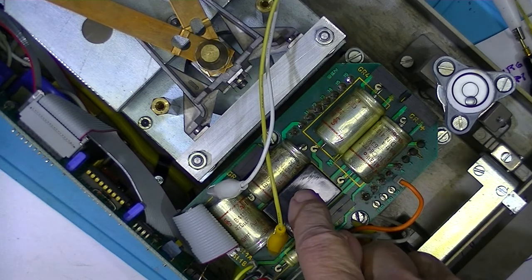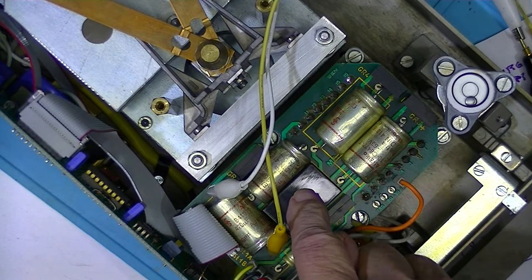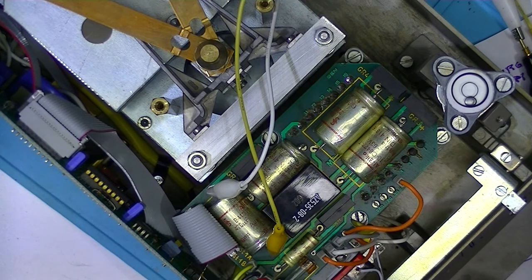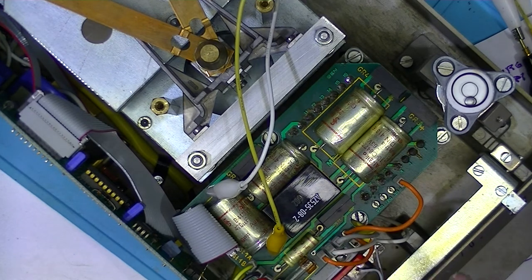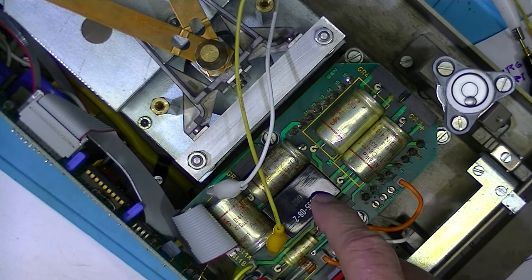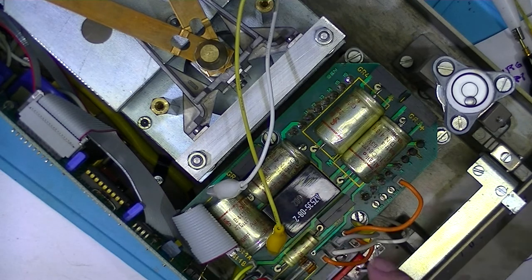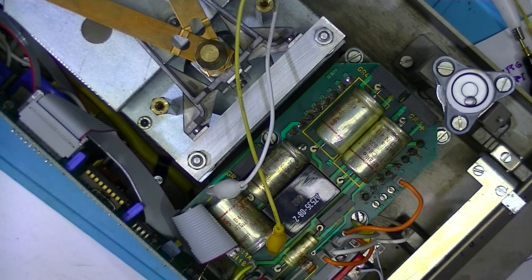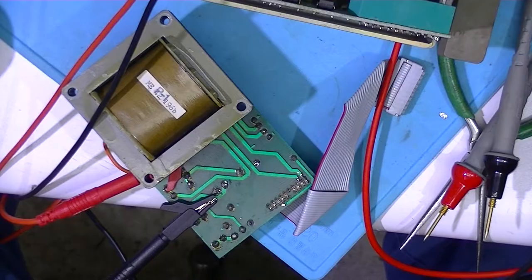This right here is a 24 volt relay, so I guess I'll take this power supply board back out. I've already had it out once and apply 24 volts to the relay terminals and see if anything happens.